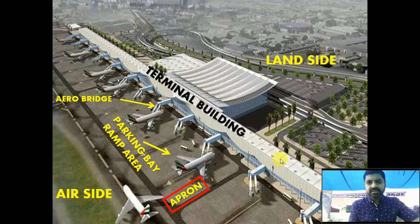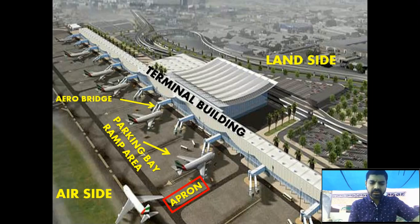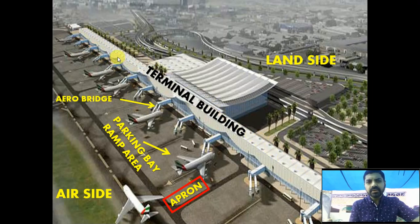The building where passengers complete all formalities — such as security, check-in, waiting for flights — and where airline offices and various other operations are located, the whole airport building, is called the terminal building.